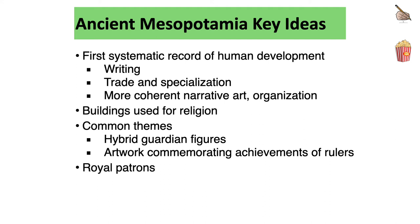Ancient Mesopotamia Key Ideas. First, a systematic record of human development took place. Humans learned how to control the wheel and plow, control floods, and construct irrigation canals, to name a few. With writing, we will have more knowledge of the way of life, art, and the culture during that time.